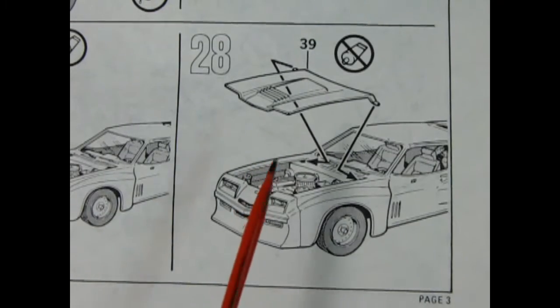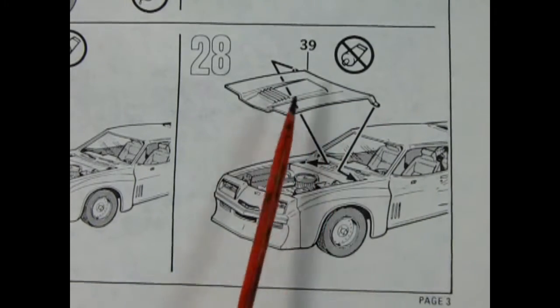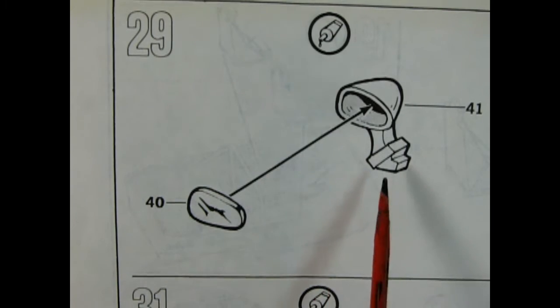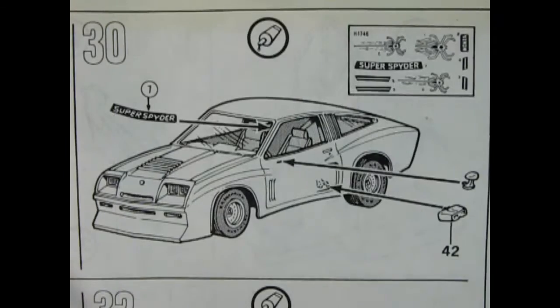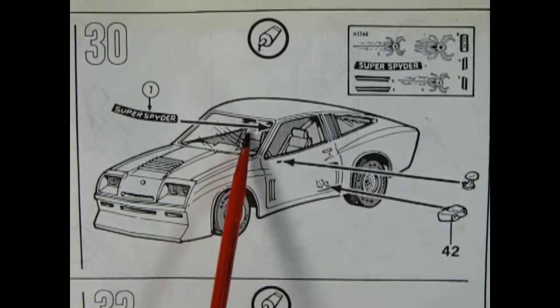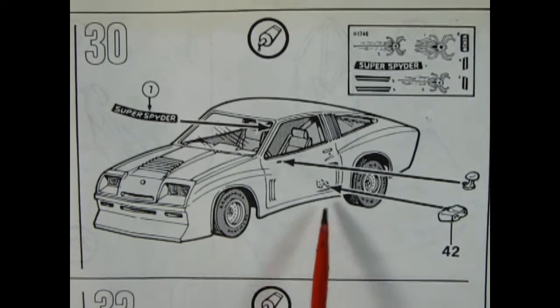Panel 28 shows our hood being put into place. You do not want to glue this, but you want to pinch in the sides here and click it in. Panel 29 shows our mirror getting glass put in it. Panel 30 shows our Super Spider decal being put in place on the window, as well as our mirror being glued in place and this cool side exhaust dump.